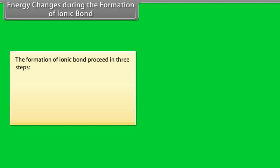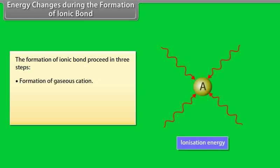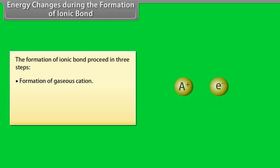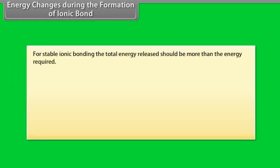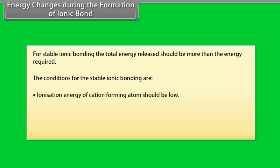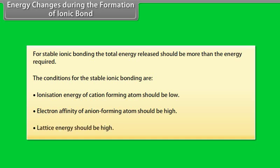Energy changes during the formation of ionic bond proceed in three steps. Step one: formation of gaseous cation — the energy required is called ionization energy. Step two: formation of gaseous anion — the energy released is called electron affinity. Step three: packing of ions of opposite charges to form ionic solid — the energy released is called lattice energy. For stable ionic bonding, the total energy released should be more than the energy required. Conditions: ionization energy of cation-forming atoms should be low; electron affinity of anion-forming atoms should be high; and lattice energy should be high.